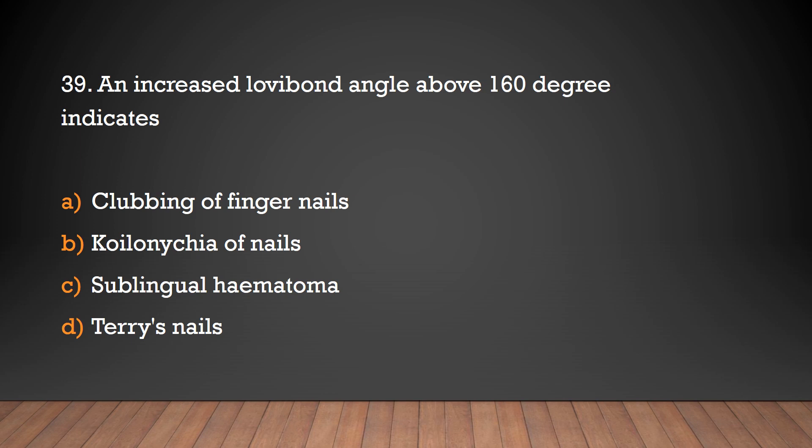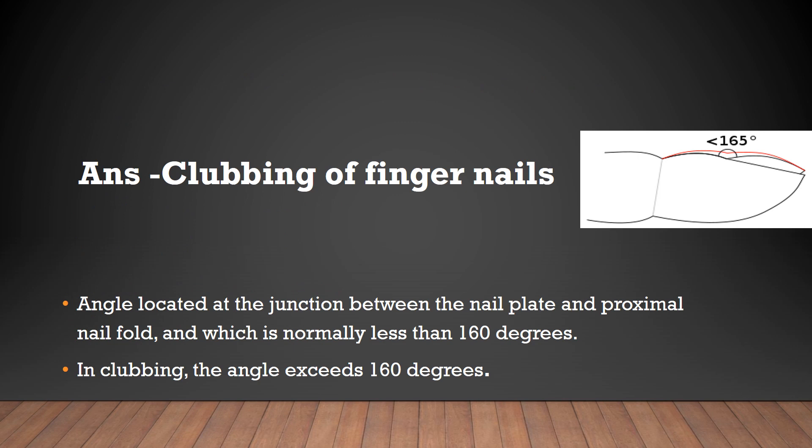An increased Lovibond angle above 160 degrees indicates: clubbing of fingernails, koilonychia of nails, sublingual hematoma, or teres nails? The answer is clubbing of fingernails. The Lovibond angle is located at the junction between the nail plate and proximal nail fold, and is normally less than 160 degrees. In clubbing of fingernails, the angle exceeds 160 degrees.